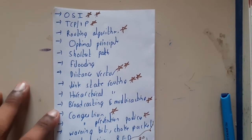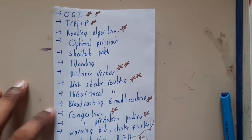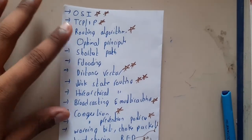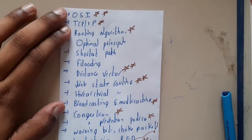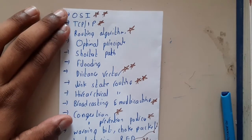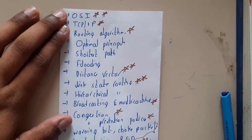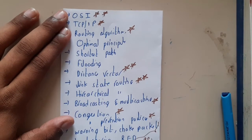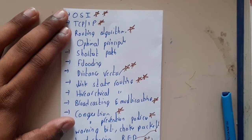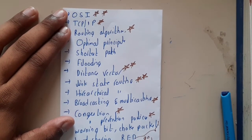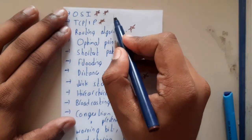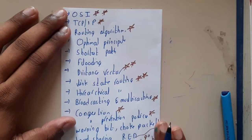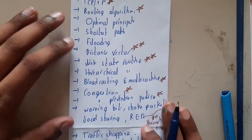Hello guys, this is the review video of Unit 1. In Unit 1 there are multiple important topics. First of all, we discussed the introduction — that is the OSI model. In multiple papers it was given, basically our seniors used to have a different syllabus — a combination of data communication and networking — so that is the reason why this question was repeated multiple times. For us also it might be repeated, so please go through it once.